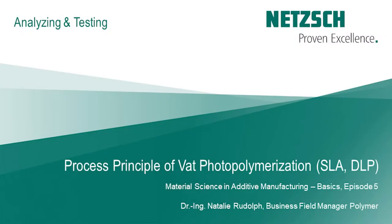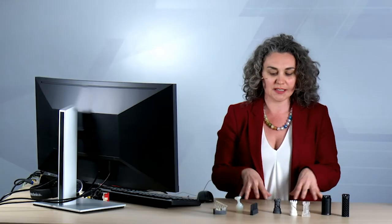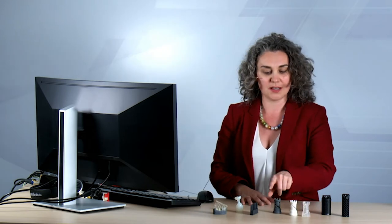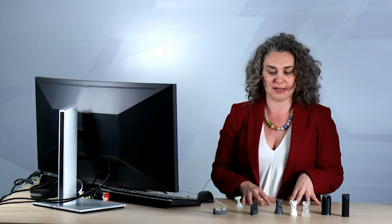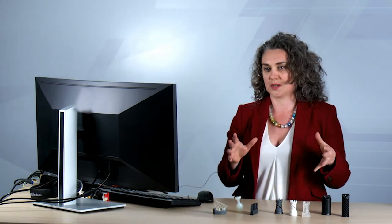In this episode, I'll talk about the process principle of VAT photopolymerization. VAT photopolymerization was defined as a process in which liquid photopolymer in a VAT is selectively cured by light-activated polymerization. You see here a couple of parts — the tower has got some siblings and other parts that I will talk about as we're moving through this short series on VAT.